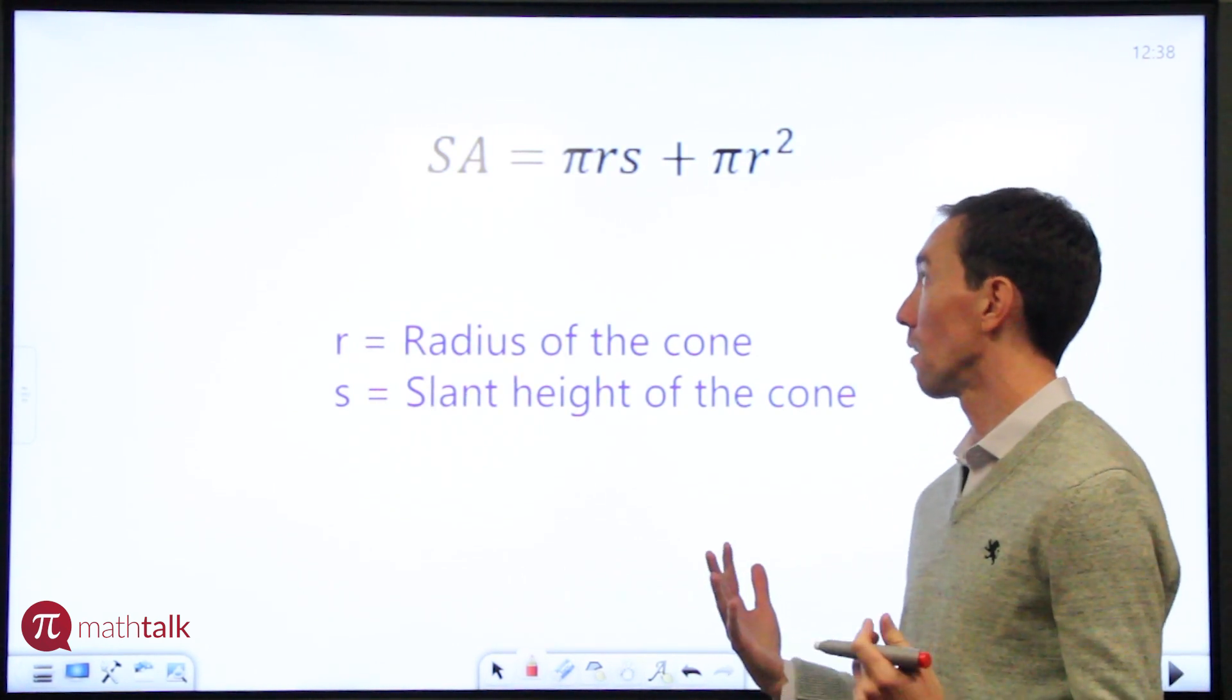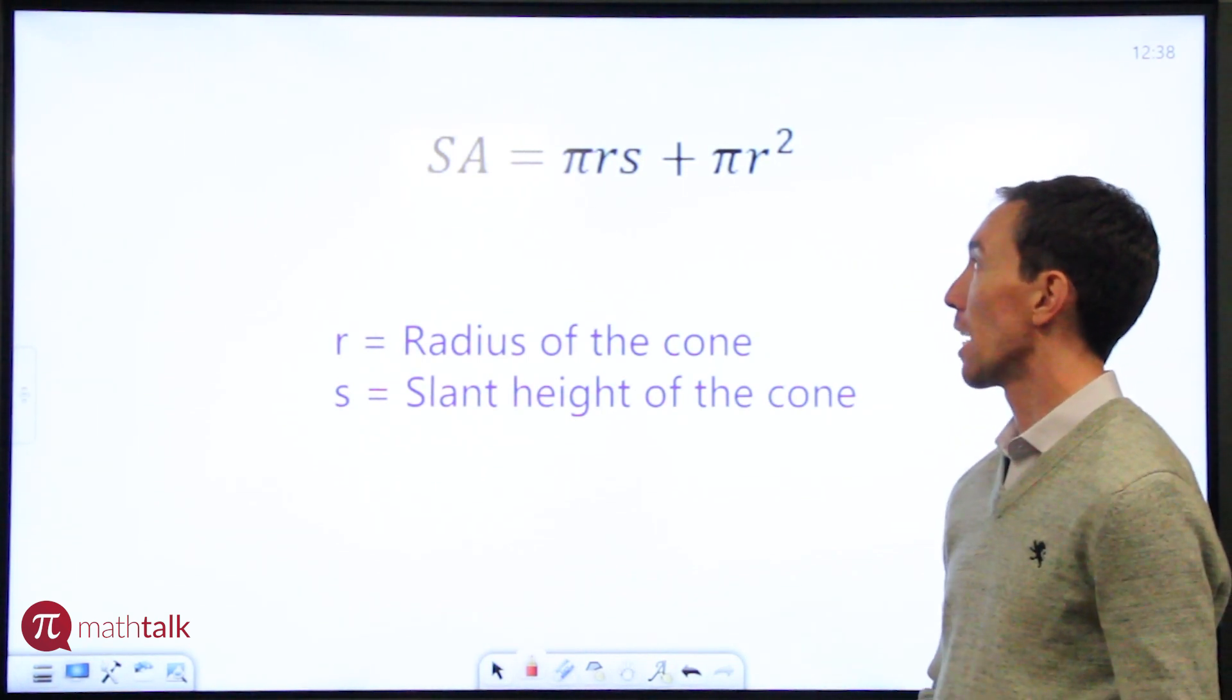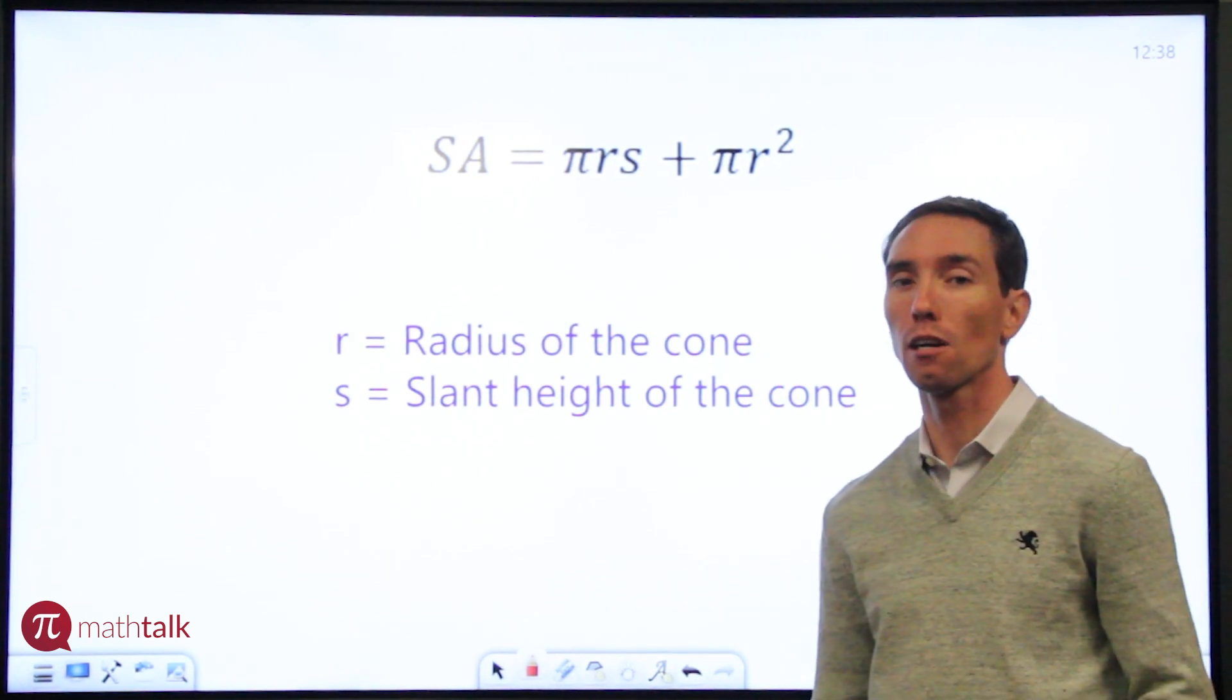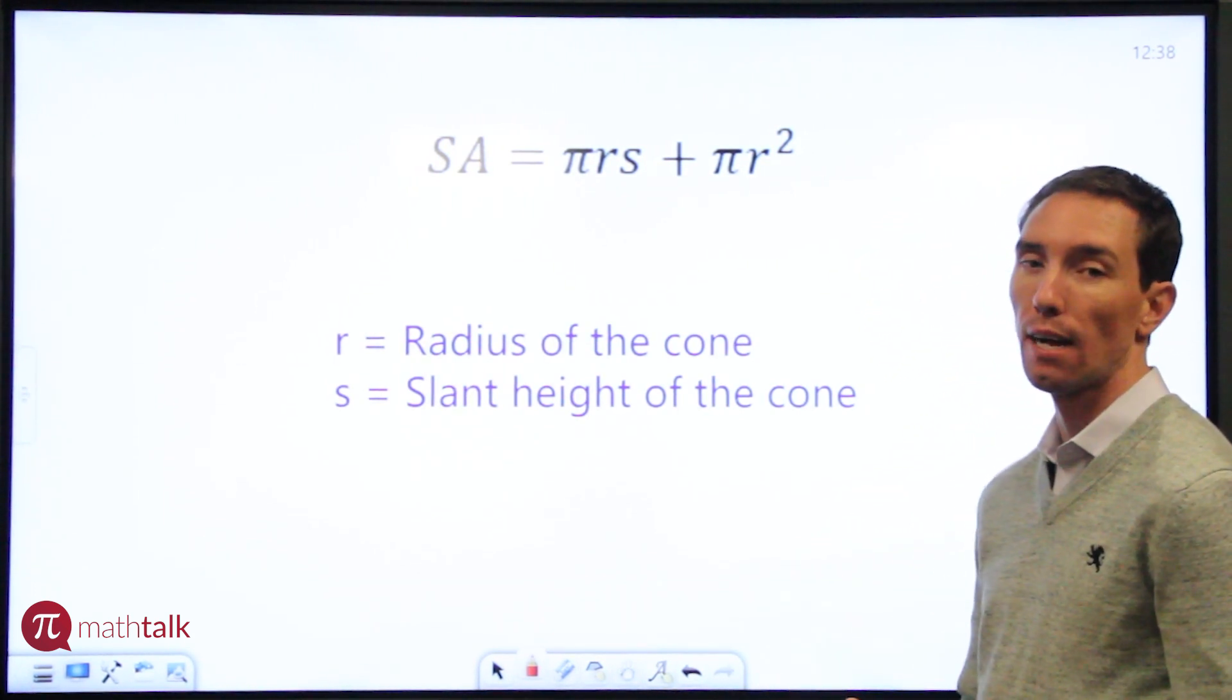Pi is, obviously it's pi, it's going to be represented by 3.14, and the r represents the radius of the cone. The bottom of a cone is basically a circle, so you can have the radius of a circle.